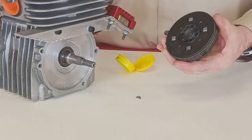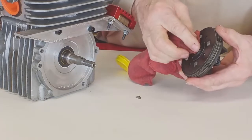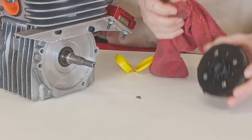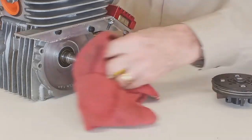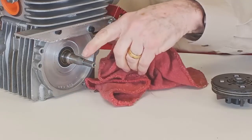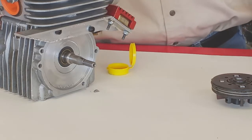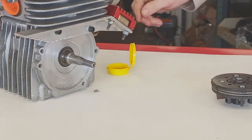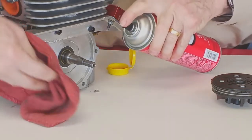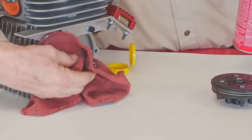When you're done lapping the crank and the clutch together, carefully clean all the valve grinding compound out of the clutch, including out of the slot where the key is going to go, and off the crankshaft, including out of the slot in the crank where the key is going to go. It's a good idea, if you can, to use a little brake clean to spray off the crankshaft to make sure that you have all the valve grinding compound out of the threads.